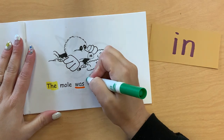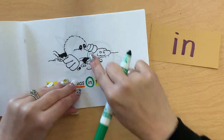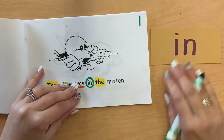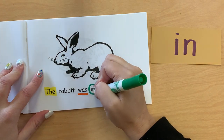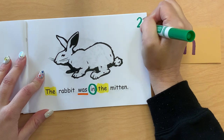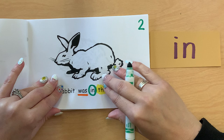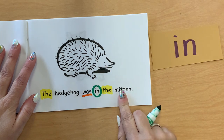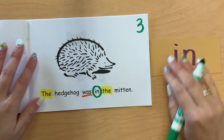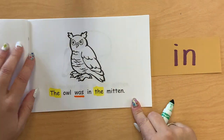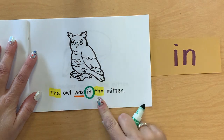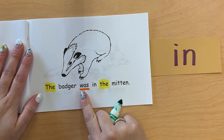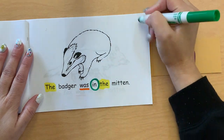The Mole was in the Mitten. Oh, look at his cute little face. I'm also going to write the number on the top — so that was one animal in the Mitten. The Rabbit was in the Mitten — that was two animals in the Mitten. Let's see how many there were. The Hedgehog was in the Mitten — and that's three. This is good for practicing your numbers and writing them. The Owl was in the Mitten — and this is four. Four animals in the Mitten!